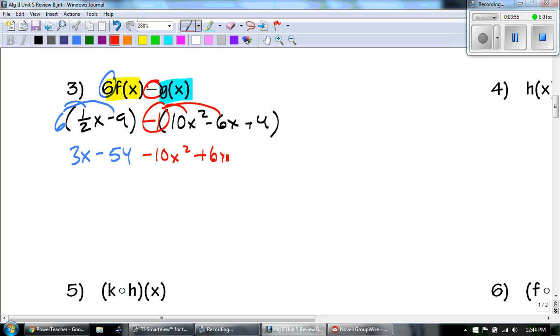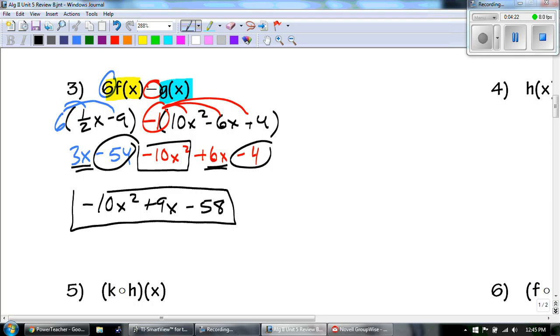Yeah, we should have g of x memorized by now, because we've had to do it like every time. So, 6 times 1 half. Well, half of 6 is 3. So we get 3x. And then 6 times 9 is 54. Back here, we're going to distribute a negative 1. So we get a negative 10x squared. Negative times a negative is a positive 6x. And a negative times a positive is a negative 4.